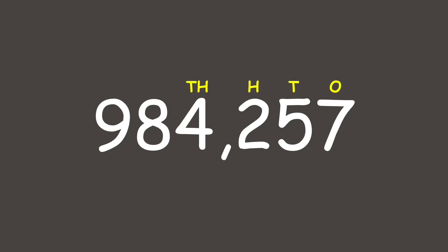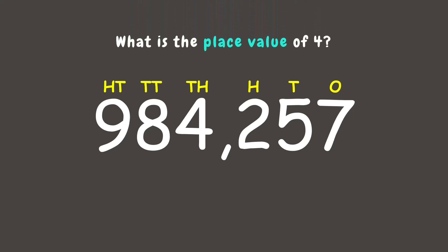Now let's practice. Let's look at the number 984,257. Let's label each place value using its abbreviation: O for ones, T for tens, H for hundreds, TH for thousands, TT for ten-thousands, and HT for hundred-thousands.